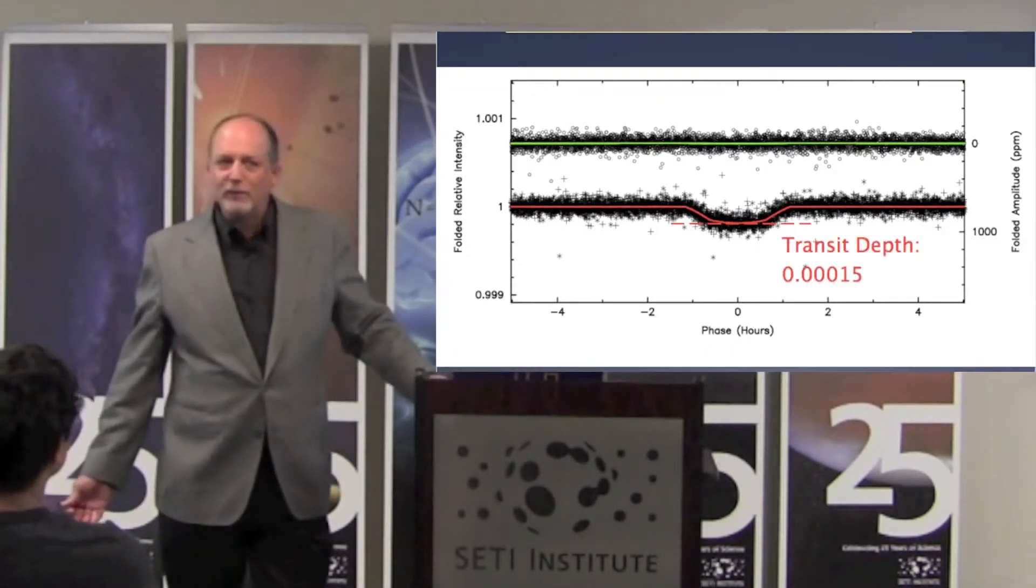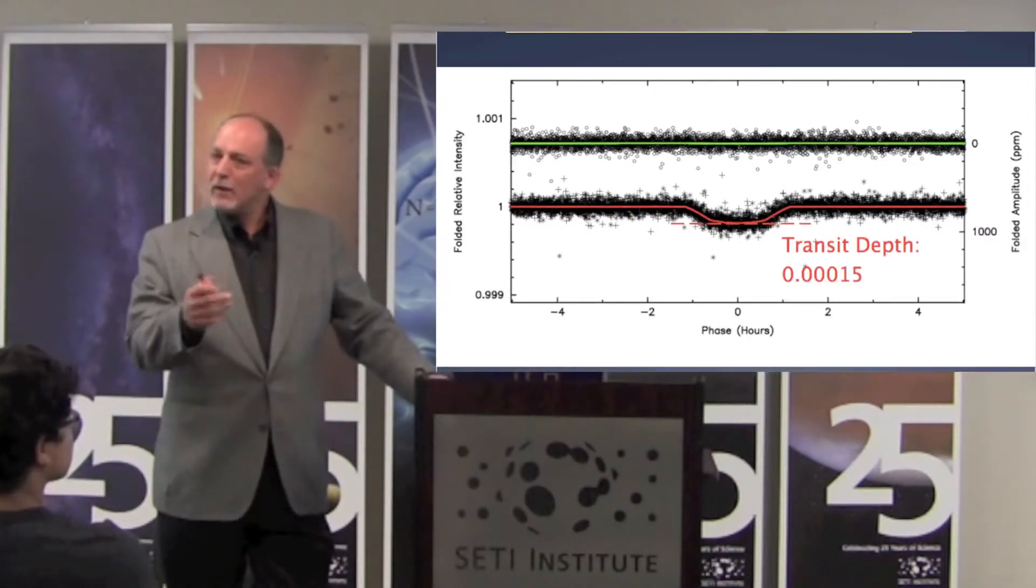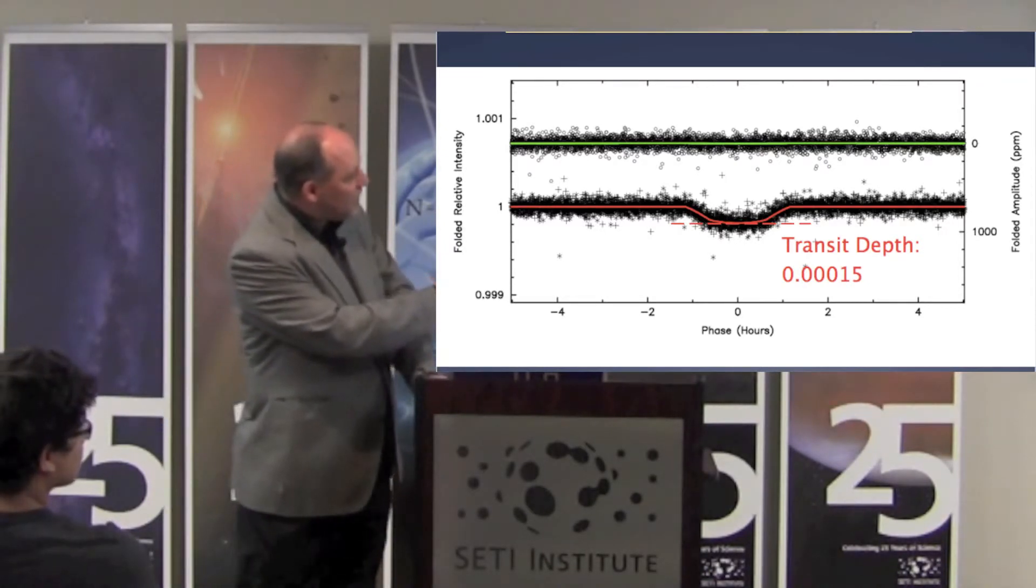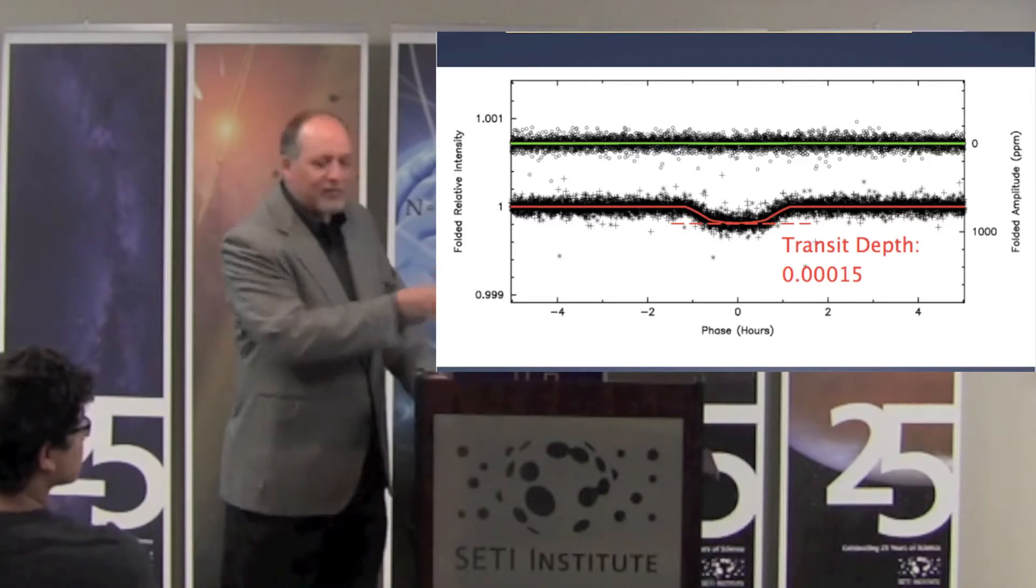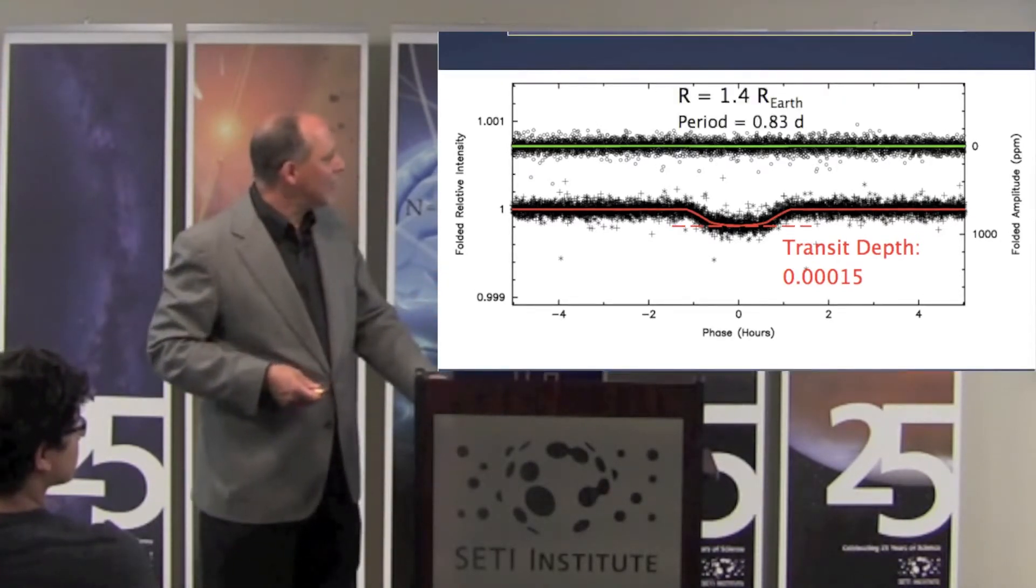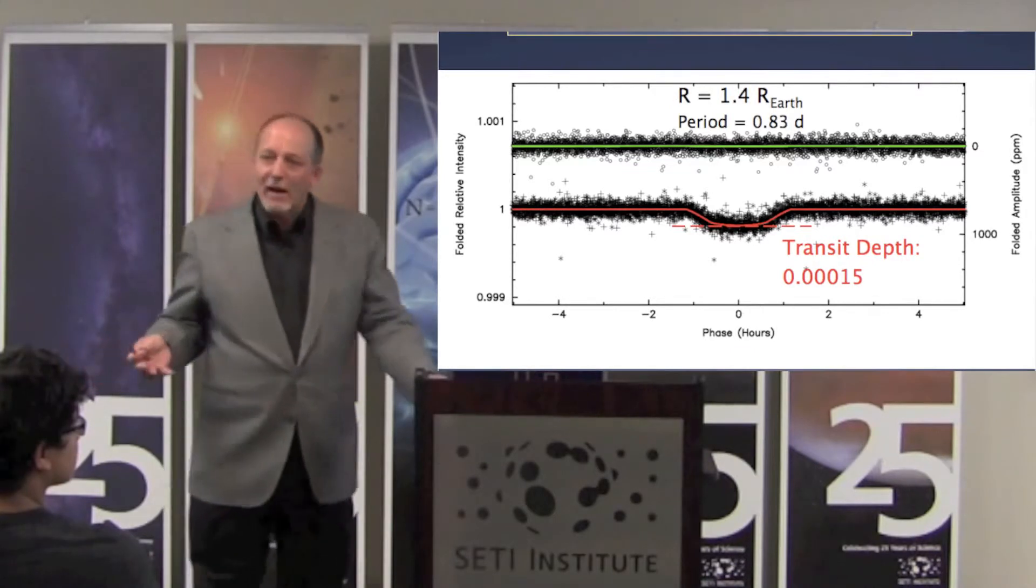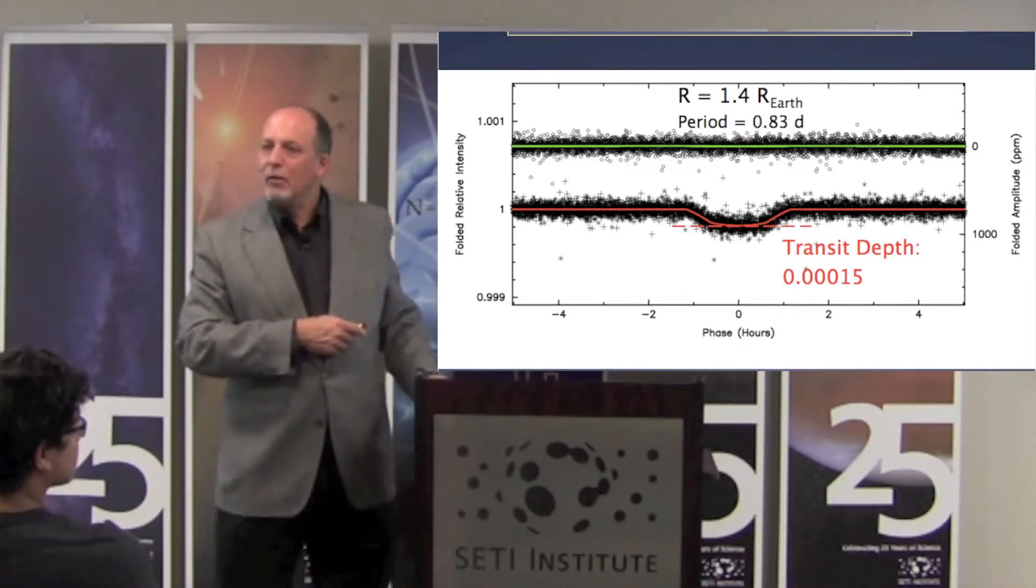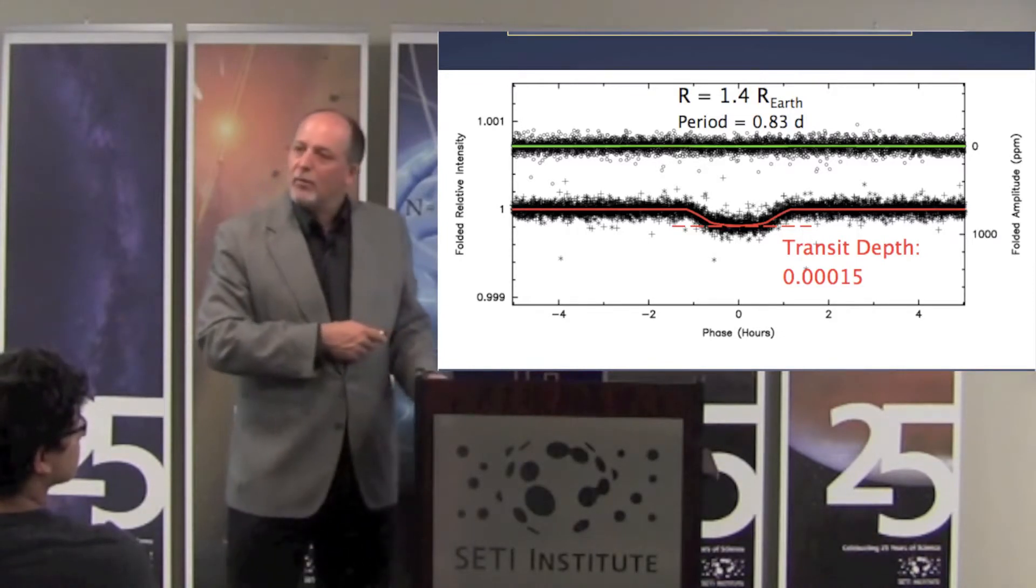Now there's more, of course. The amount of dimming tells you how big the planet is. And in this case, the dimming is 0.00015 of the normal brightness - 1.5 parts per 10,000. And that immediately tells you the size of the planet turns out to be 40% bigger than the Earth, 1.4 Earth radii.